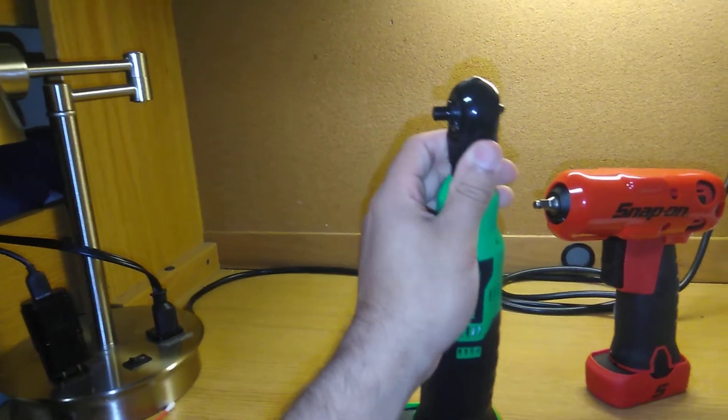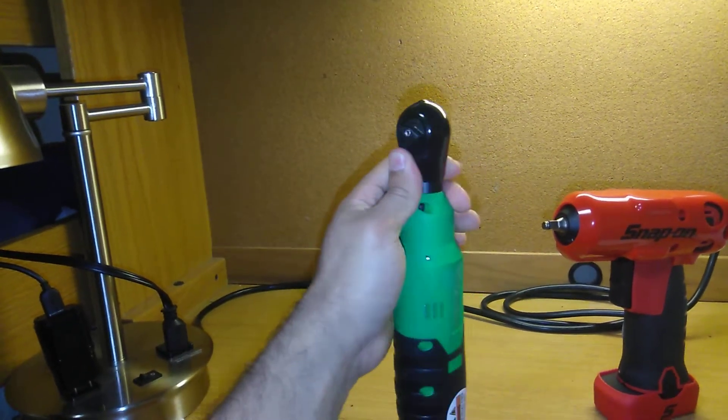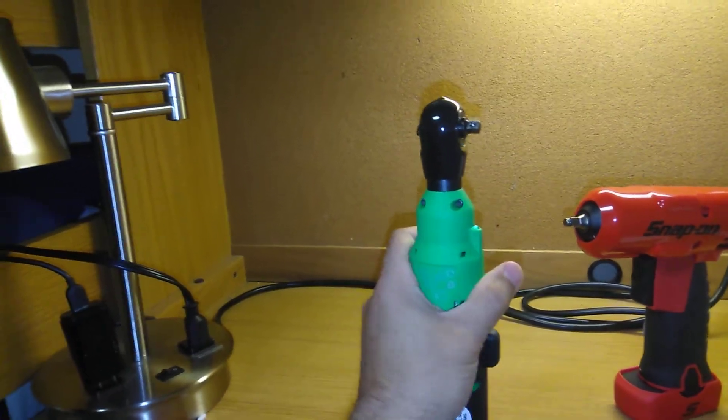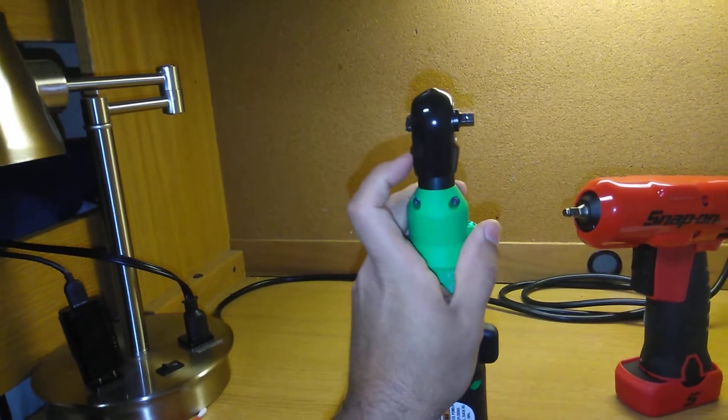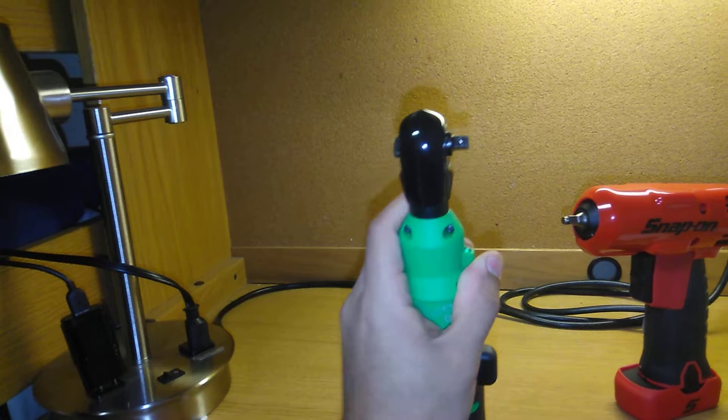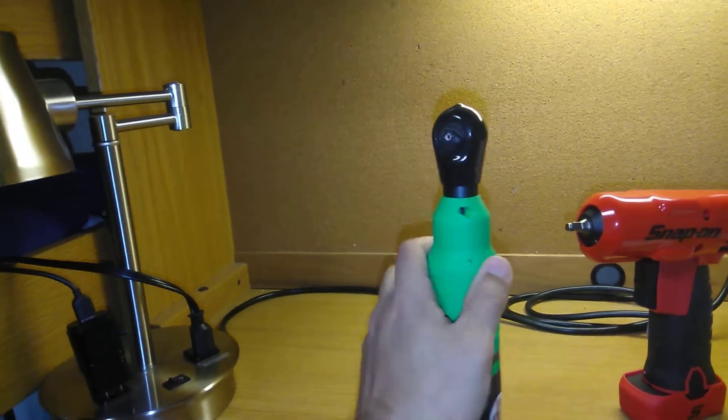The part number for that is YA905 and this was $5.74 tax included and that shipped to me. The cover was a bit tough to get on, but it fit. I think when I was looking online this was probably one for an air ratchet or something like that and it ended up fitting just fine.